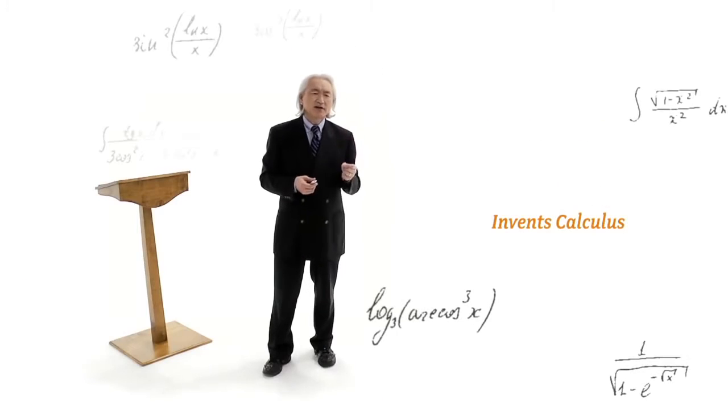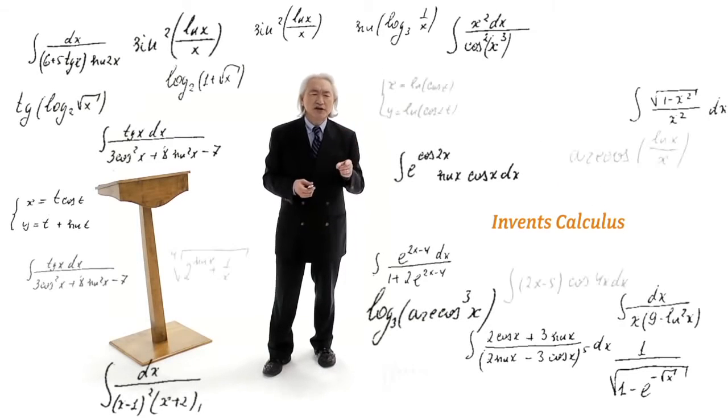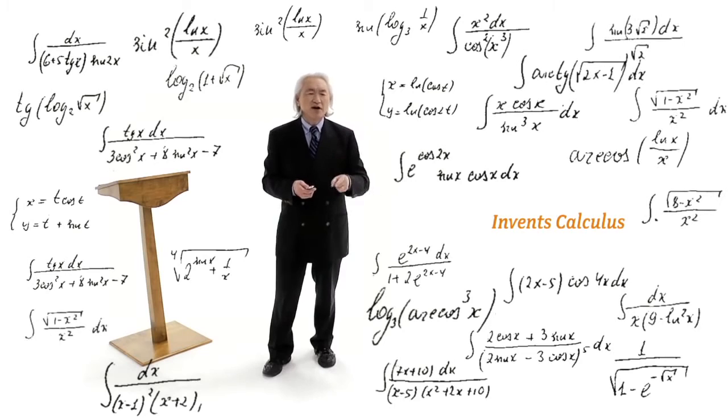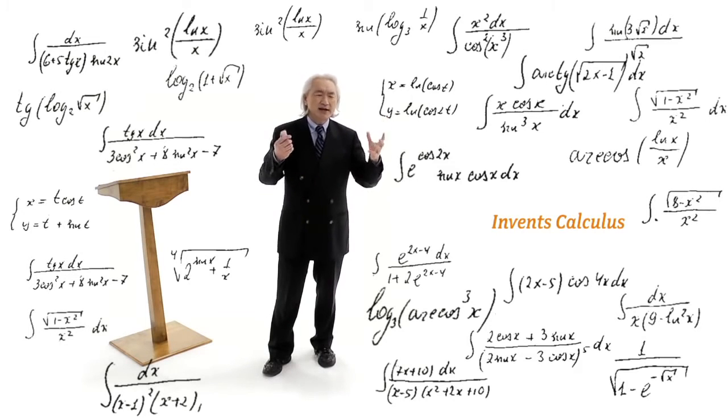In fact, he created calculus at the rate at which you learn it when you are a freshman in college. And why did he create calculus? To calculate the motion of a falling moon.